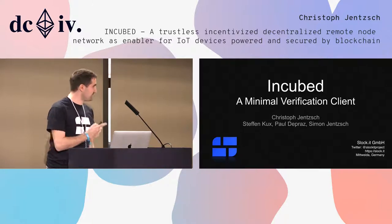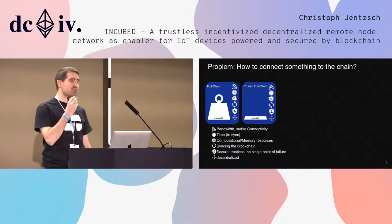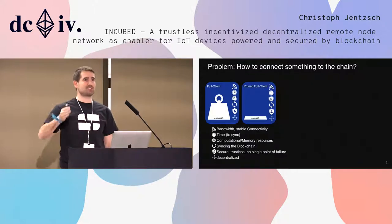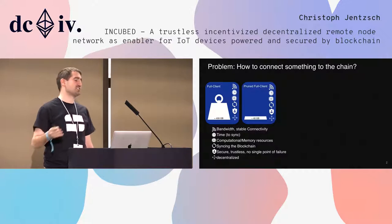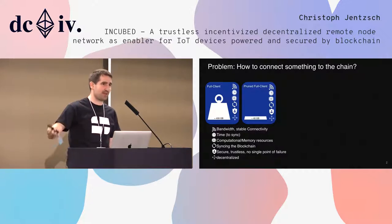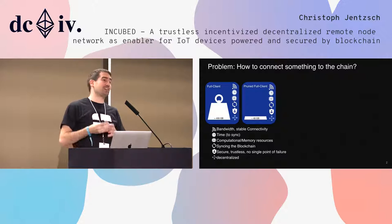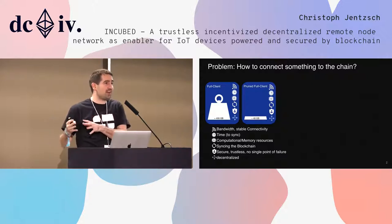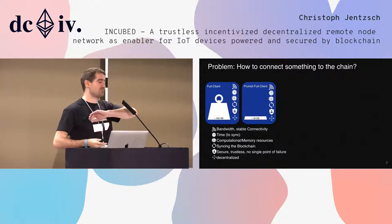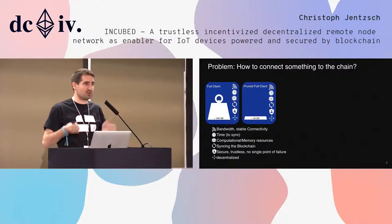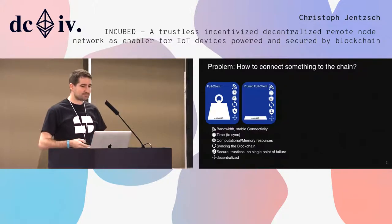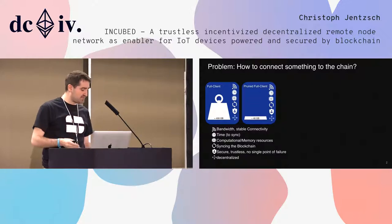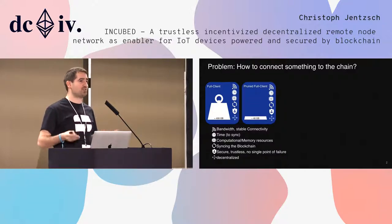So what is the problem we are trying to solve with Incubed? If you want to connect something to the chain, you need to run a client. You can either run a full client, which needs a lot of storage, bandwidth, and computation. Or you can run a pruned client — you throw away all the past states and just keep the current state and the blockchain. This is still considered a full node. But if you think about IoT devices or mobiles, this is far too much.